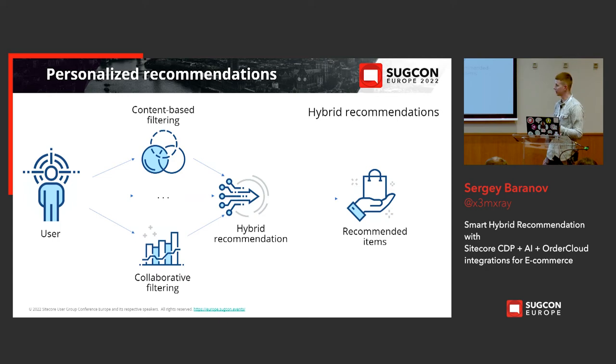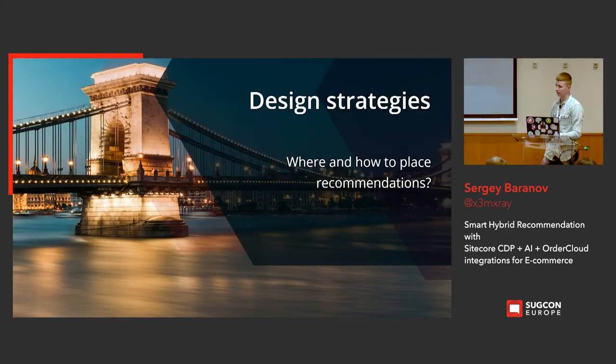A hybrid approach can be implemented by running different types of predictions separately, combining the results, and ordering by scoring. A hybrid recommendation system overcomes the limitations of every single recommendation type and highly increases prediction performance.